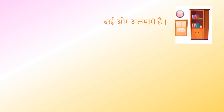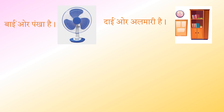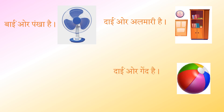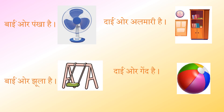आइए इन वाक्यों को पढ़ते हैं। 'दाईं ओर अलमारी है' — दाईं का मतलब है On the right side. 'बाईं ओर पंखा है' — बाईं का अर्थ है On the left side. 'दाईं ओर गेंद है।' 'बाईं ओर झूला है।'